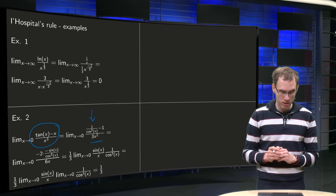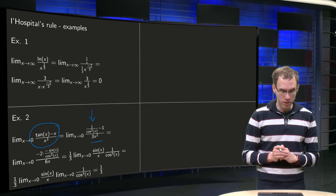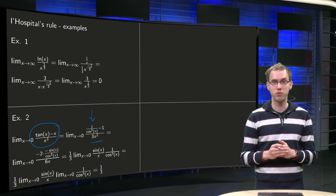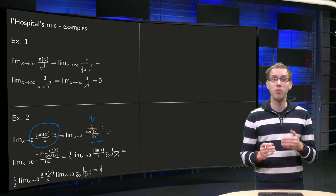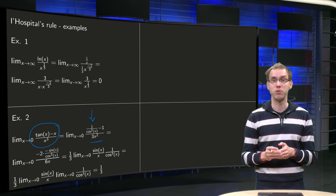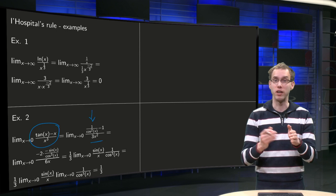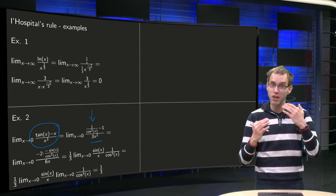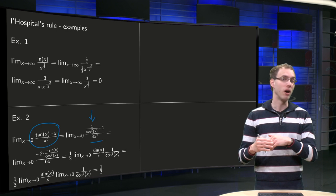And then we will need to apply L'Hopital's rule again, because what do we have now? We have 1 over cosine x squared minus 1. Well if x goes to 0, cosine x equals 1, so we have 1 minus 1 equals 0, and 3x squared is still 0, so we still have 0 over 0.